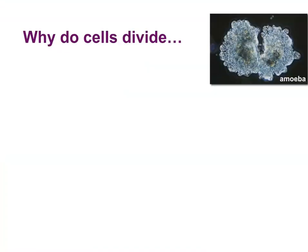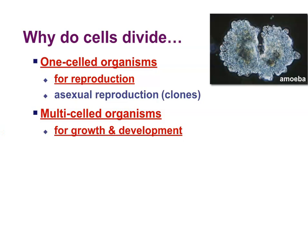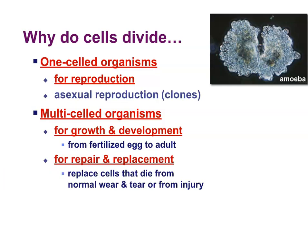Cells have different reasons for dividing. If you're a single-celled organism like the amoeba and you divide, you've also reproduced — that's a form of asexual reproduction, so both organisms will be clones or genetically identical. If you're a multi-celled organism, when your cells divide by mitosis it's for growth and development, going from that fertilized egg to an adult, and also for repair and replacement. Your cells get used up, damaged by normal wear and tear or injury, and mitosis is how you replace them.